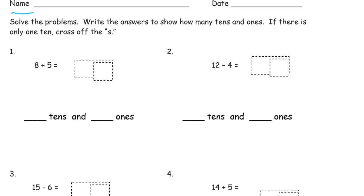So here we have 8 plus 5. If you can do this, you might be able to do this mentally. That's a 2 and a 3. There's your 10. So it's 10, 3, 13. That's 1 ten. So there's only one 10, so we'll cross out the S. And 3 ones.